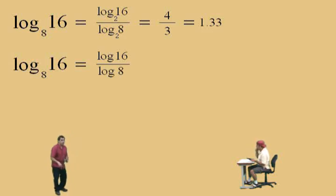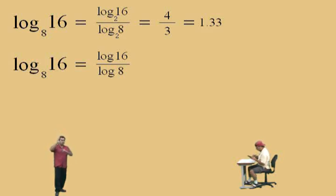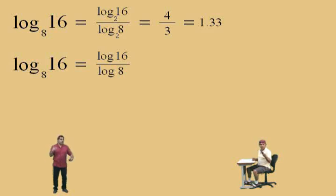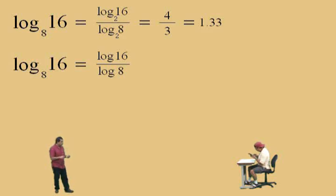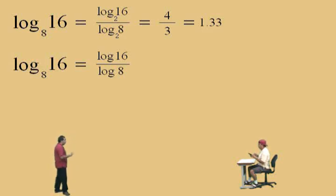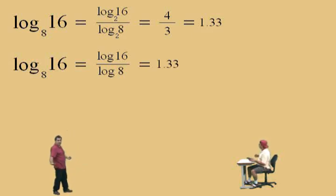Remember, when you apply the change of base rule, your top logarithm and your bottom logarithm must be the same base. You can't put a log base 10 on top and a log base 3 on the bottom — you must have the same base. We change it to base 10 so we can use our calculators. Take your calculator, calculate log of 16, then divide by log of 8. Charlie gets 1.33 — notice, it's the same answer as before, because it's the same logarithm.